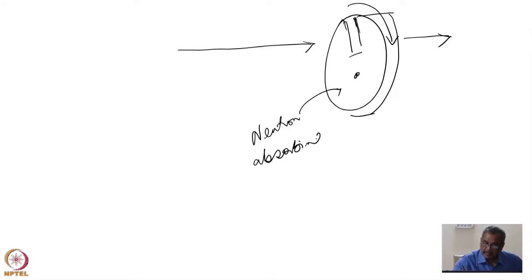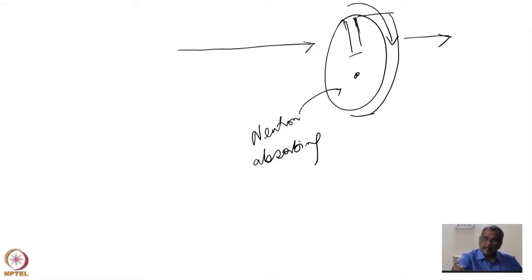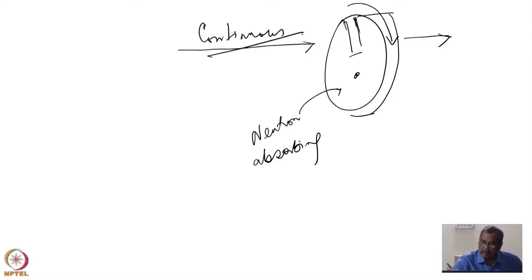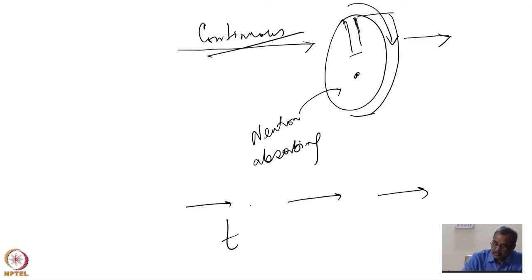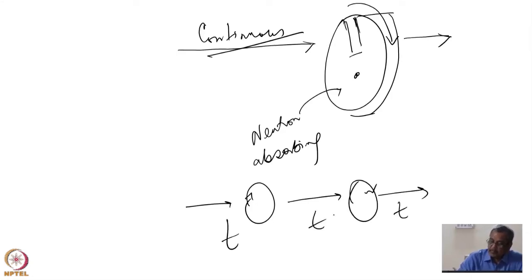The chopper material can be cadmium encased in stainless steel or similar neutron-absorbing materials, and it is rotated. When rotated, every time the slot comes around I get a neutron burst. So from a continuous beam in a reactor, depending on the rotation speed, I have converted it into a periodic neutron beam.